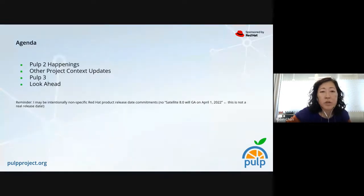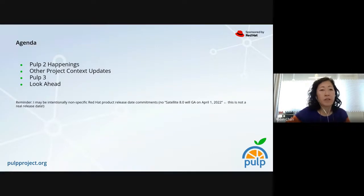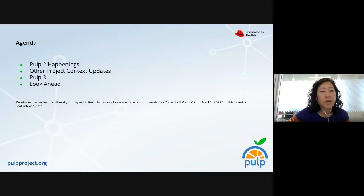Just a quick overview of the agenda. I'll go over what's happened in PULP 2 for the last year, a few updates around some of the other factors going into our planning, and how our project has been evolving over the past year outside of the code. Then I'll go over PULP 3 features and updates and a small look ahead.